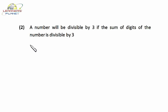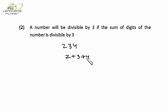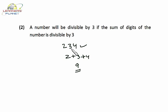Now let's discuss the divisibility test of 3. A number will be divisible by 3 if the sum of digits of the number is divisible by 3. Let's take one example: suppose I have the number 234. How would I know whether this number is divisible by 3 or not without actual division? Just add up the digits: 2 plus 3 plus 4 equals 9. Now see whether 9 is divisible by 3. Yes, since 3 times 3 is 9, so 9 is divisible by 3. Hence 234 will also be divisible by 3.